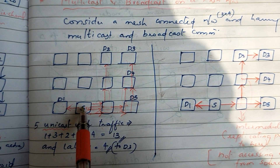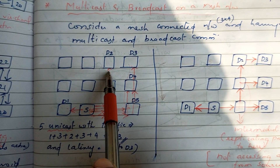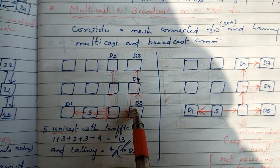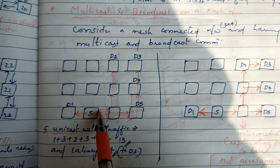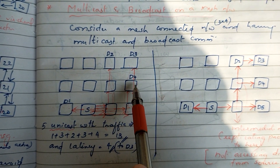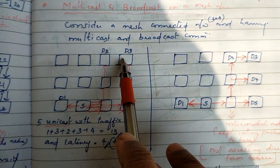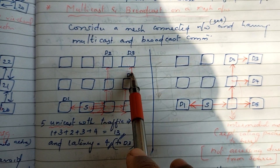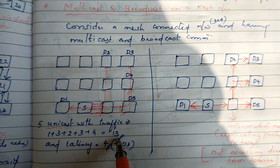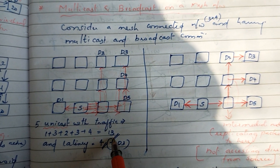The source is D1, so 1 plus 3. D5 is 1 plus 2, so 1 plus 3 plus 2. D4 is 1 plus 2 plus 3, which equals 3. D3 is 1, 2, 3, 4. So the total traffic is 13.